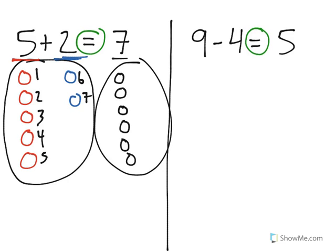As you can see, both have 7 circles. That means that they are equal.